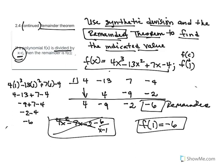We did it correctly. Your instructions say to use synthetic division and the remainder theorem to work these problems. Yes, you can substitute in for every x and simplify, but that's not the method we are using. When you do it on paper, the work should show synthetic division using the remainder theorem to get the answer.